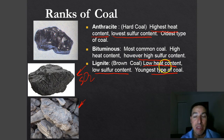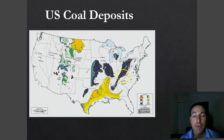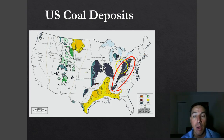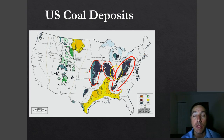In the United States our coal deposits are vast — we have one of the highest coal deposits in the world. There is a large area in the eastern part around Appalachia: West Virginia has lots of coal, as do Ohio, Pennsylvania, Kentucky, Tennessee, Illinois, and Indiana. Iowa, parts of Missouri, Nebraska, and Oklahoma also have large deposits, and there are some deposits in Michigan and Texas as well.